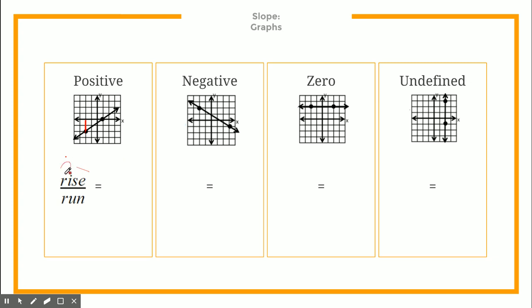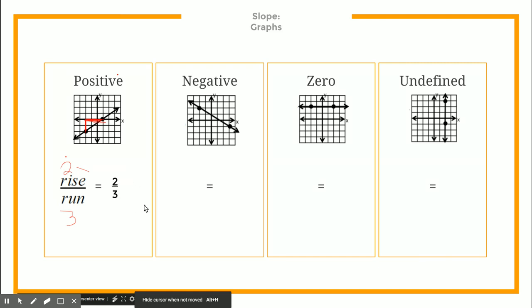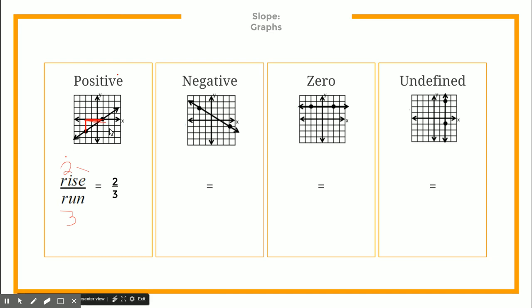Now I draw a horizontal line over to reach the other dot, and when I do, I count over 1, 2, and 3 — so my run is 3. I write that as the fraction 2 over 3. This is a positive slope because the graph rises up towards the right, which — if you remember Mr. Slope — signifies a positive slope.